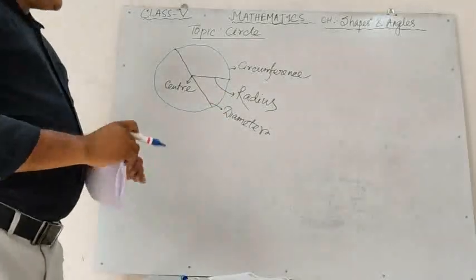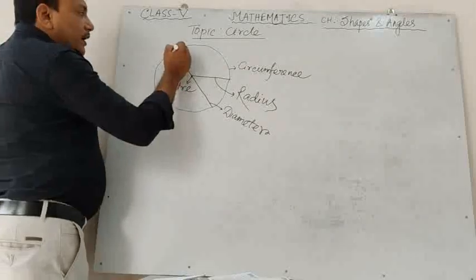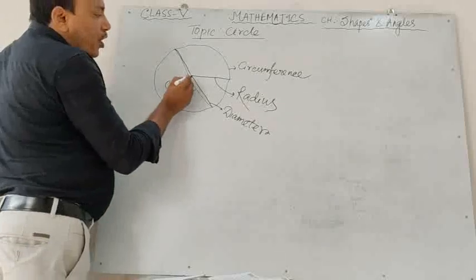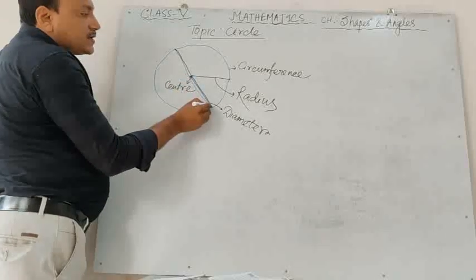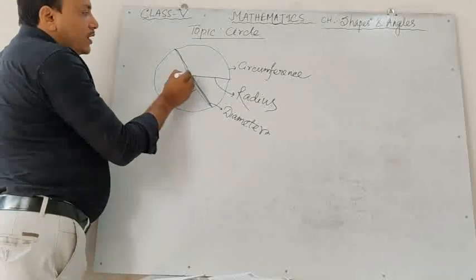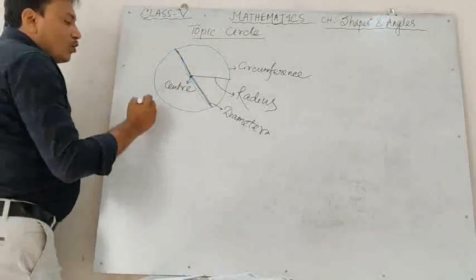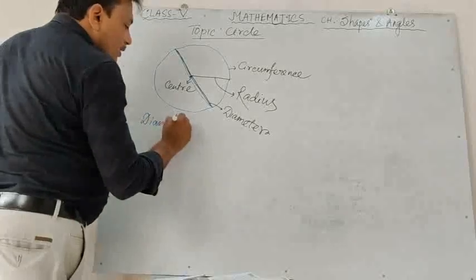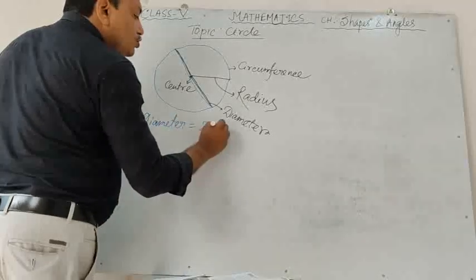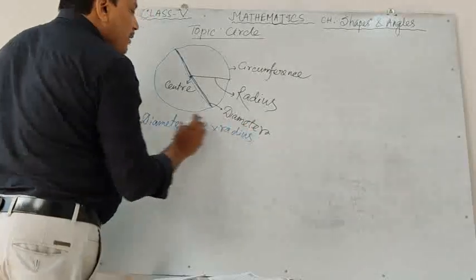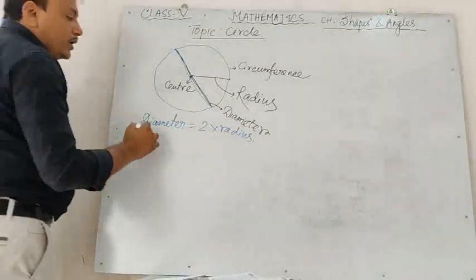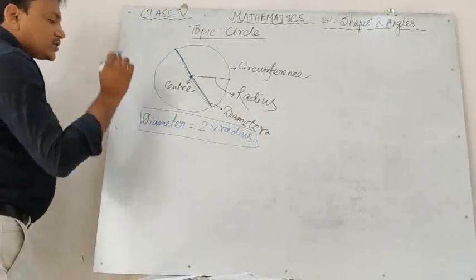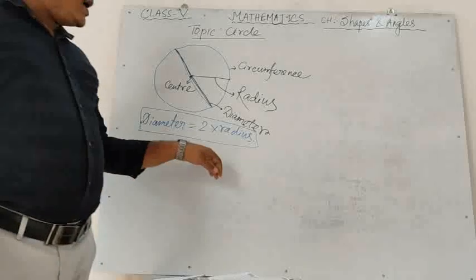Now you can see — this is the diameter of the circle, this is the center, and from here this is the radius. So we can write: diameter equals 2 into radius. It is the relation between diameter and radius.